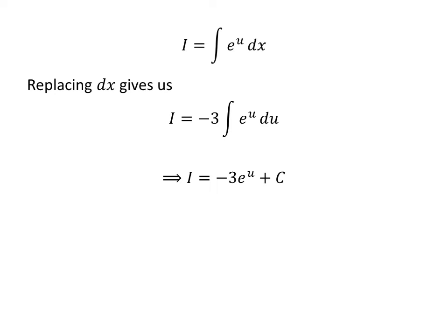Anti-derivative of exponential of u is exponential of u. So, I is equal to minus 3 times exponential of u plus capital C. Capital C is the arbitrary constant of indefinite integral. Do not forget to add this constant.